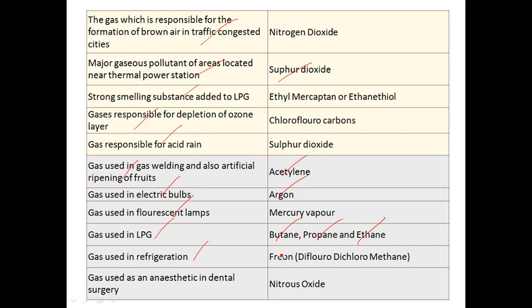The gas used as an anesthetic in dental surgery is nitrous oxide. These are all important facts about gases. Please subscribe to the channel — thank you, friends.